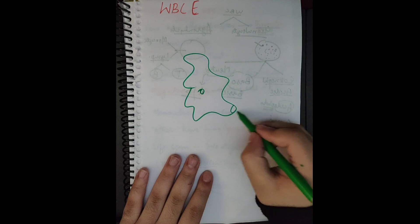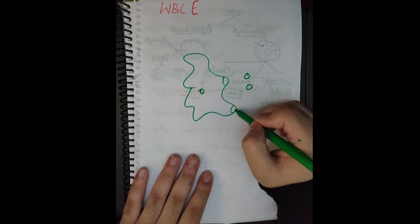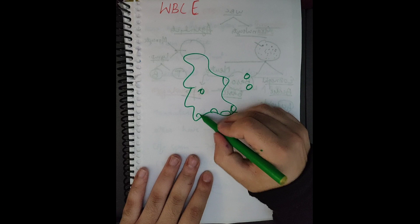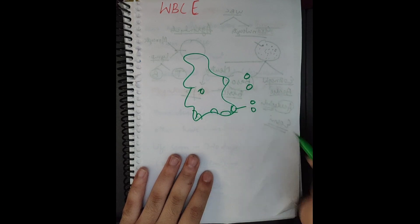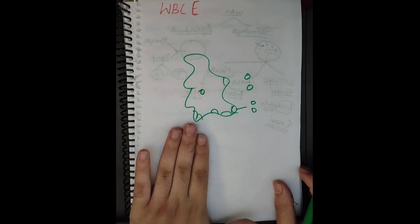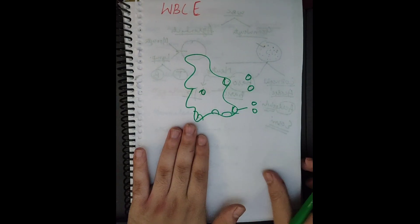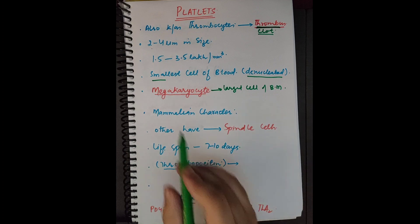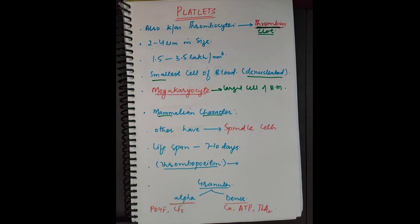From the pinching of the cytoplasm, the cytoplasm breaks into pieces from the megakaryocyte. When it breaks, it results in the formation of platelets. So the megakaryocyte is the largest cell of the bone marrow, which results in the formation of the platelets.